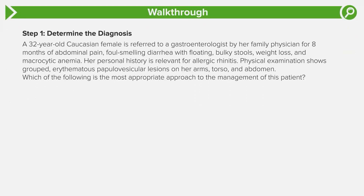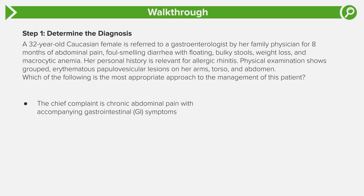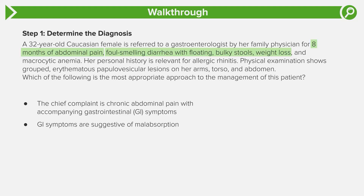Step one: determine the diagnosis. The chief complaint is chronic abdominal pain with accompanying GI symptoms — eight months of abdominal pain. When you look at the GI symptoms in the question stem, they're really suggestive of malabsorption. The patient has foul-smelling diarrhea that is floating, because of high fat content, bulky stools because not a lot of contents are being absorbed, weight loss due to malnutrition and malabsorption, and blood results also consistent with malabsorption.